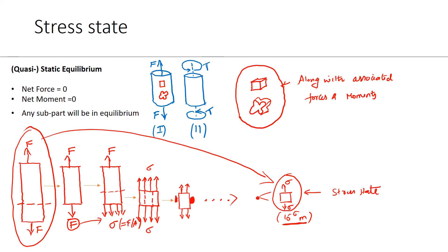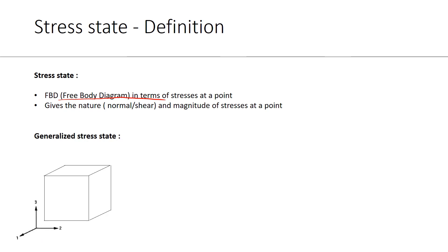Let me loosely define the stress state. It will be the free body diagram in terms of stresses at a point. The stress state gives the nature and magnitude of stresses at a point. For a 3D case, a point could be represented as a cube, and a generalized stress state will look like this. The stress components that are perpendicular to the plane are known as the normal stresses, and those parallel to the plane are known as the shear stresses.